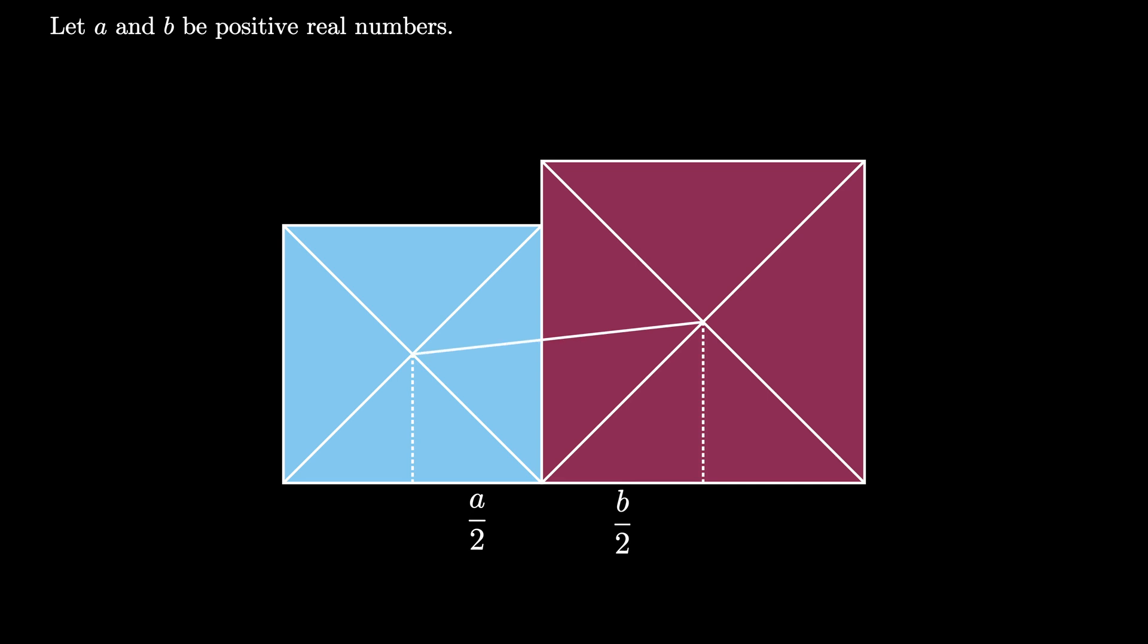Now we can connect the center points of the two squares to create a right triangle pictured here. The legs of this right triangle are A divided by the square root of 2 and B divided by the square root of 2 since both of those are hypotenuses of the previously described right triangles.